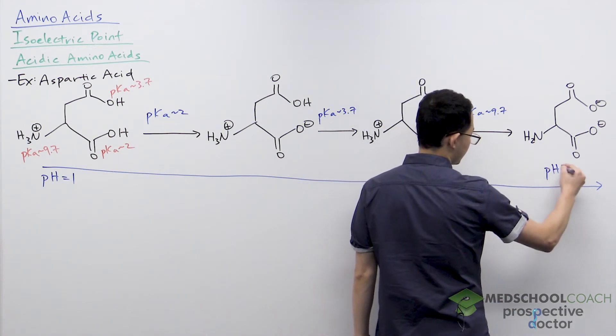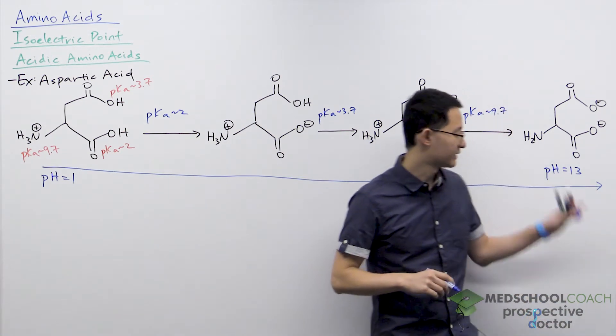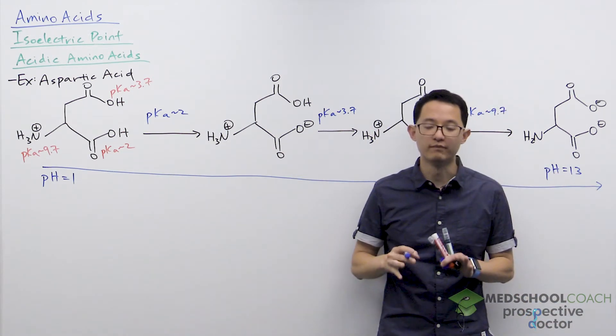So you could be at something like 11, 12, 13, whatever number you want to pick, so long as this pH value is greater than all of the pKa's.